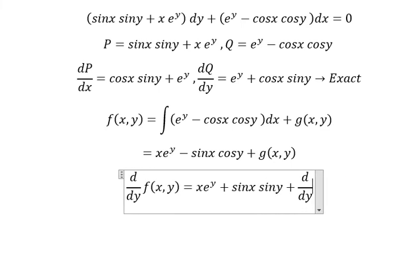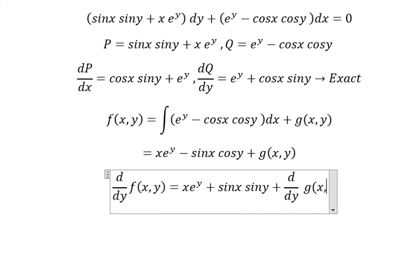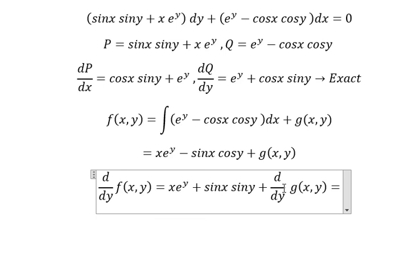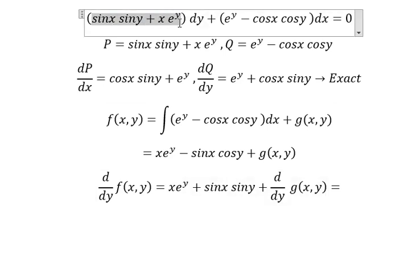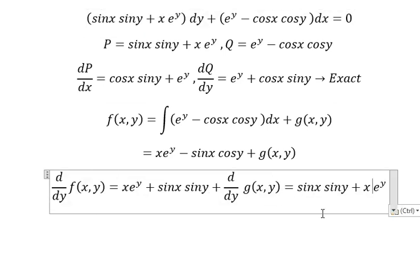Plus d/dy of g(y). We know that this equals Q. Now we simplify both sides and find that d/dy of g(y) equals 0.